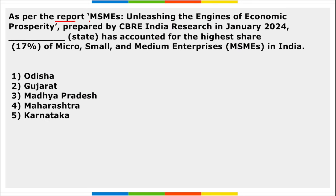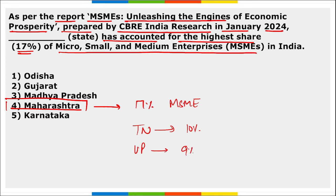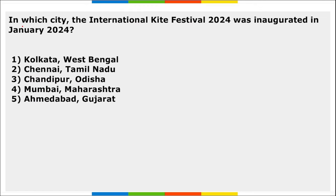As per the report 'MSMEs: Unleashing the Engines of Economic Prosperity' prepared by CBRE India Research in January 2024, Maharashtra accounted for the highest share — 17 percent — of MSMEs in India. This is followed by Tamil Nadu at 10 percent and Uttar Pradesh at 9 percent. CBRE India Research is the knowledge partner of the New India Summit 2024. The MSME sector contributes nearly 30 percent of India's GDP and 44 percent of India's exports.